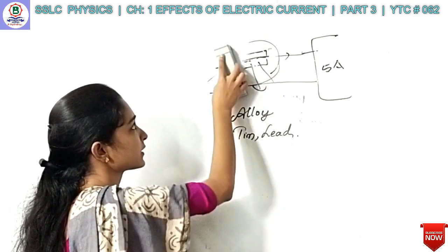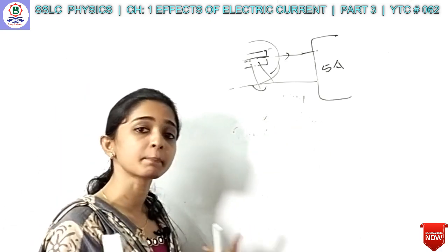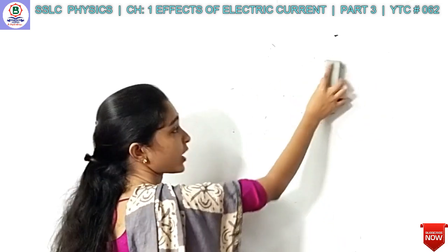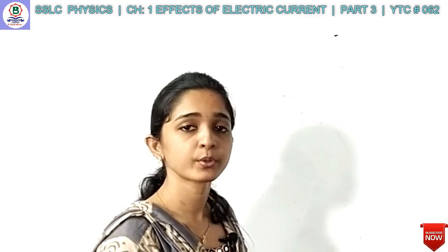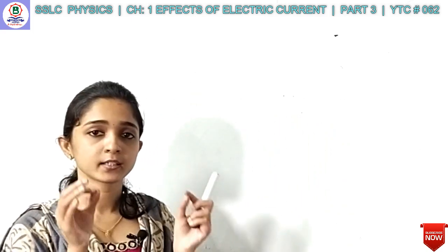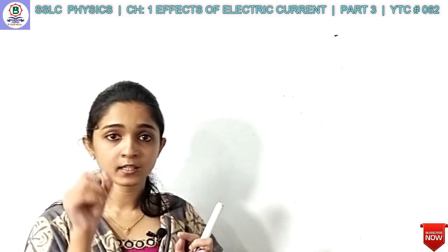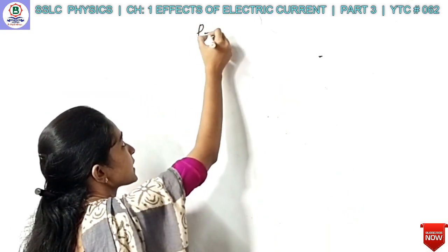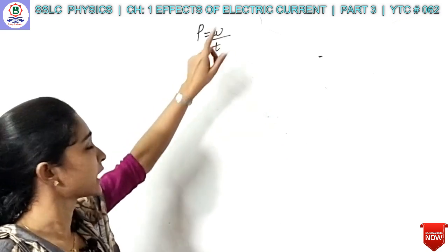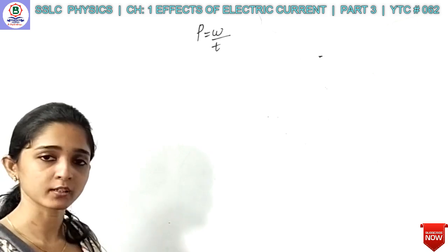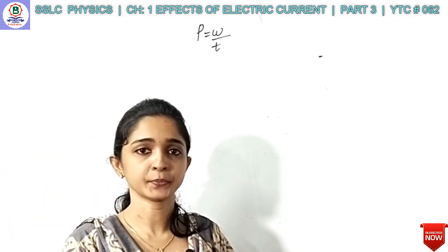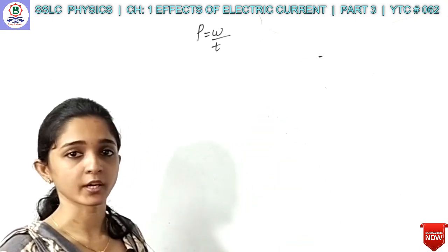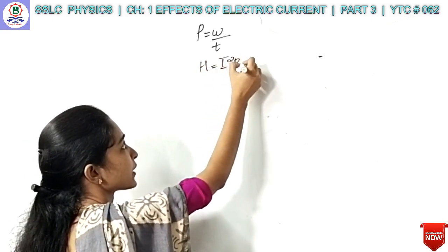It is the capacity to do work. If we can do high work, we can do a high amount of work. Power is the capacity to do work — work done per unit time. Power equation: P is equal to W by t. W is work, t is time — work by time. We will learn about Joule's law. Joule's law is related. We will try to derive the equations. Joule's law: H is equal to I squared R t.